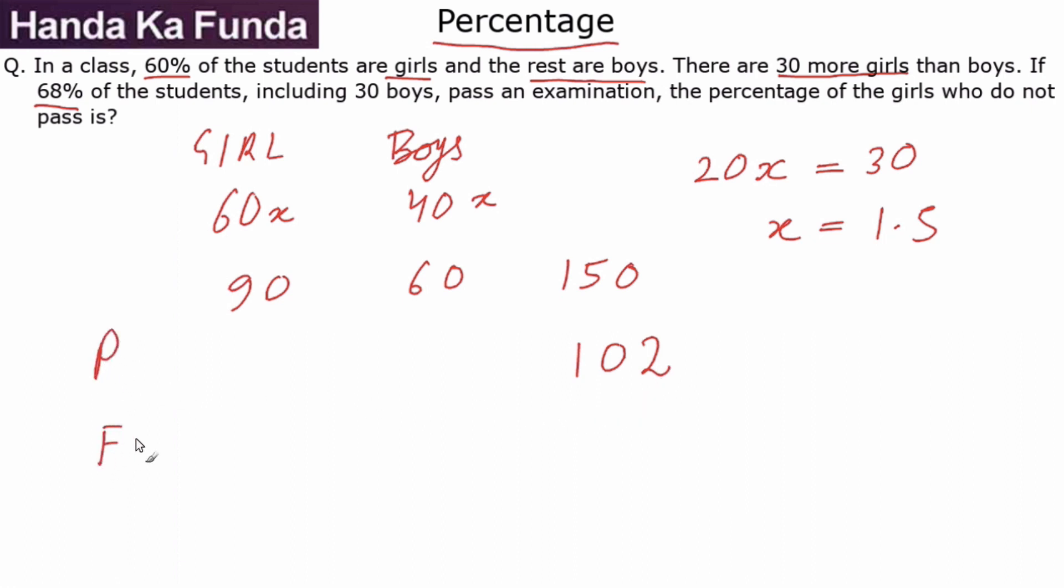If 102 students have passed, how many students have failed? 48 students, or the remaining 150 minus 102. 48 students have failed. We are given that 30 boys have passed. From 60, 30 boys have passed, that means 30 boys have failed.